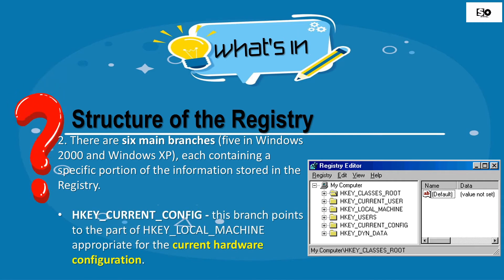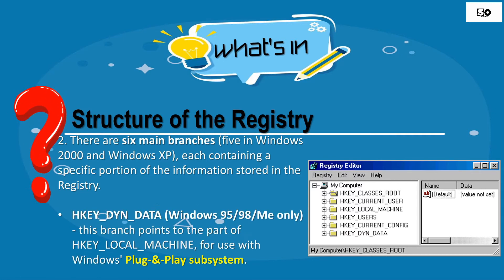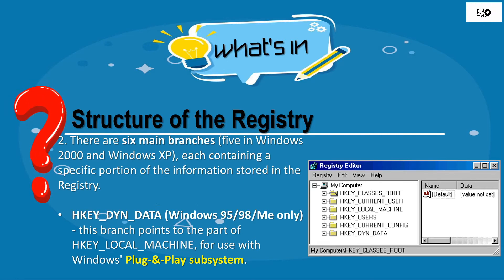Fifth is the HKEY_CURRENT_CONFIG. This branch points to the part of HKEY_LOCAL_MACHINE appropriate for the current hardware configuration. Last is the HKEY_DYN_DATA, available in Windows 95, Windows 98, and Millennium Edition only. This branch points to the part of HKEY_LOCAL_MACHINE for use with the Windows Plug and Play subsystem.